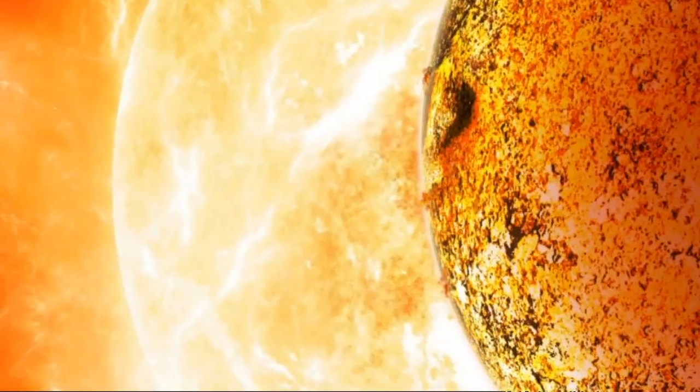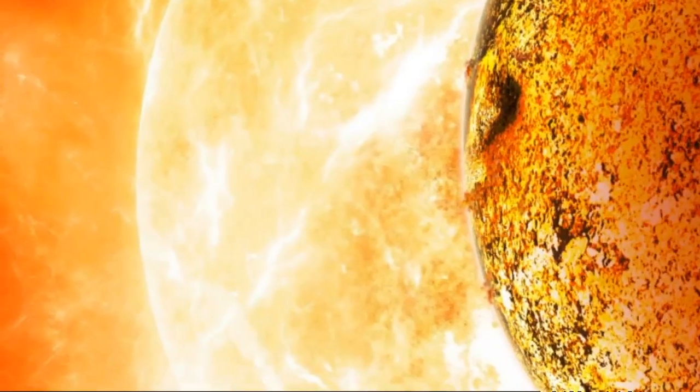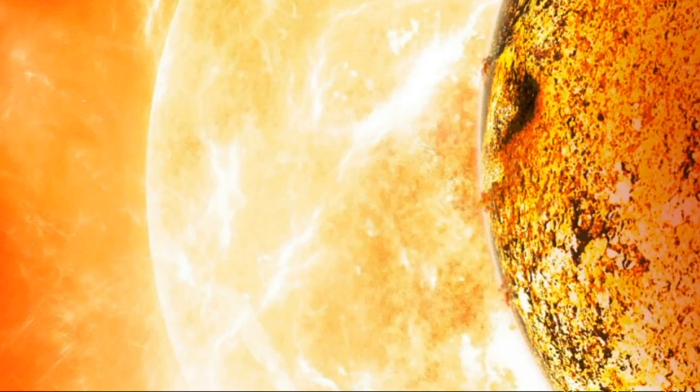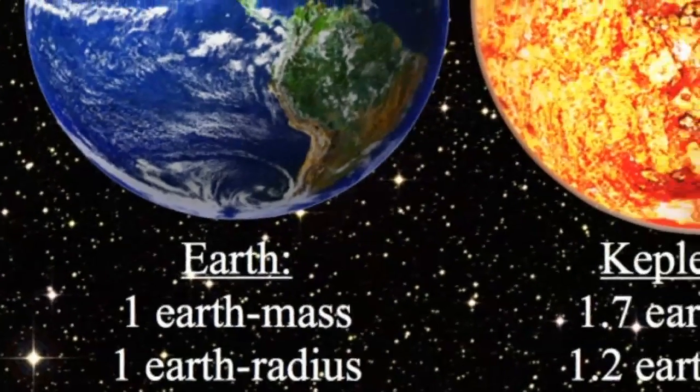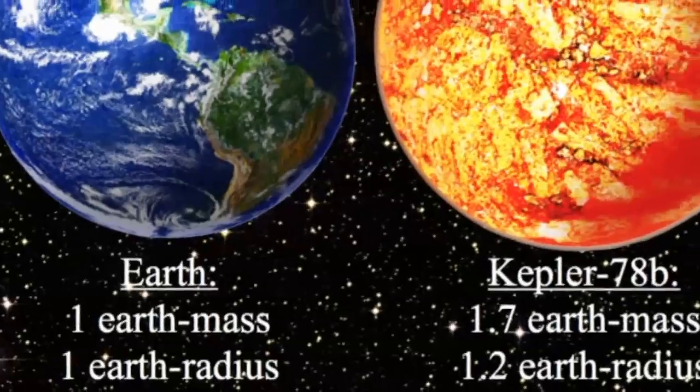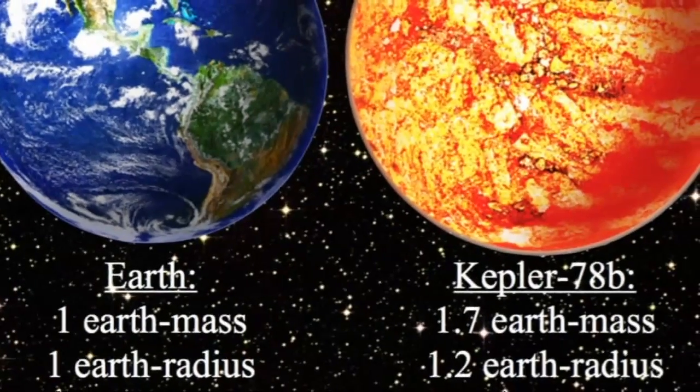Partly down to orbiting the surface of its host star, which is slightly smaller than our Sun. Earth's density is 343 pounds per cubic foot, whereas Kepler 78b's is 331.